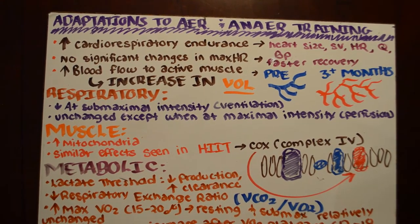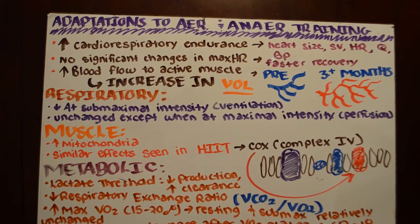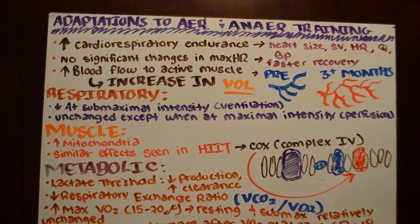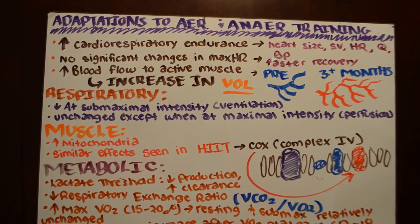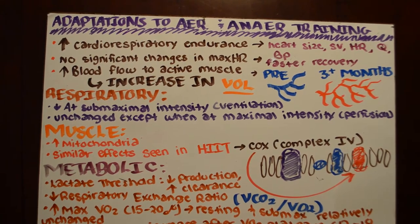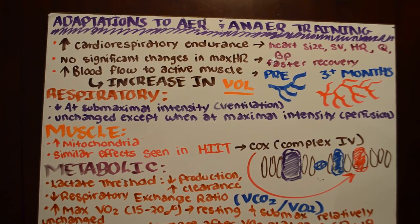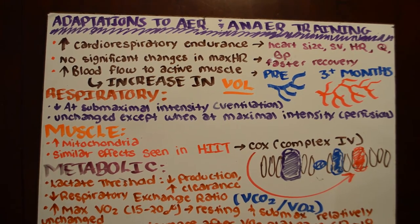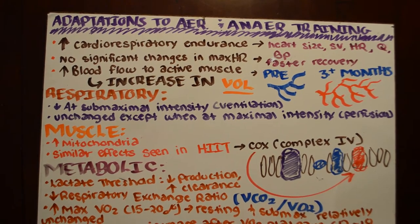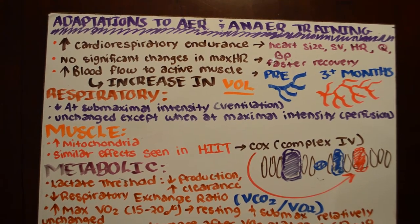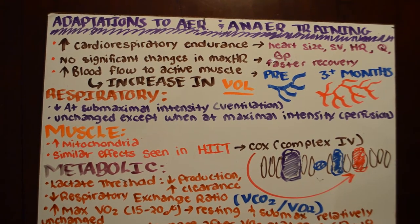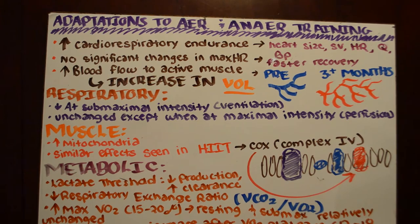The majority of this video is going to cover aerobic training; anaerobic we'll get into at the end, but it's not as in-depth. With aerobic training, the first thing we're going to see is an increase in cardiorespiratory endurance. That literally means we're going to have a more efficient interplay between the heart, the blood, the lungs, and the various components that compose that — such as alveoli, bronchioles, all that type of stuff.